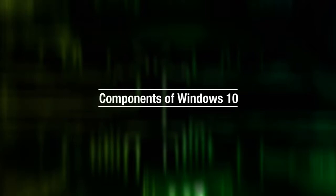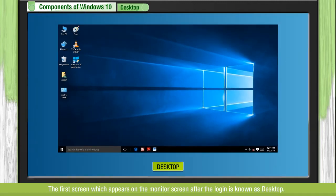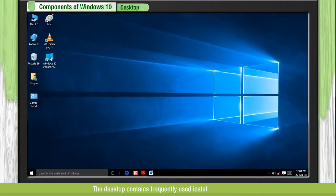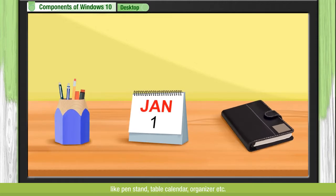Components of Windows 10. The first screen which appears on the monitor screen after the login is known as Desktop. The Desktop contains frequently used installed programs. Its arrangement is very similar to the top of our study table where we arrange our things like pen stand, table calendar, organizer, etc.